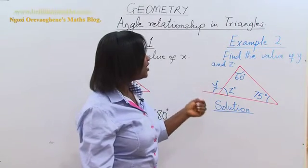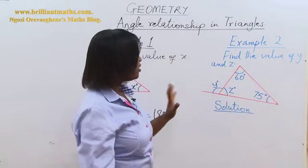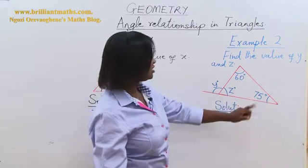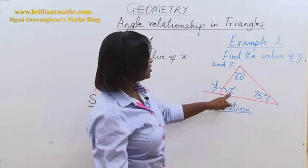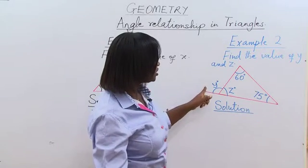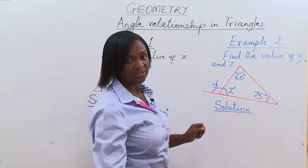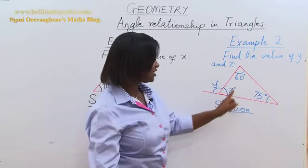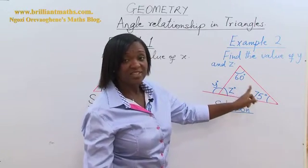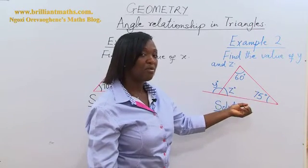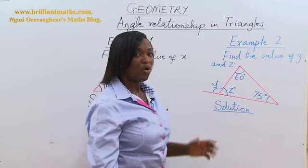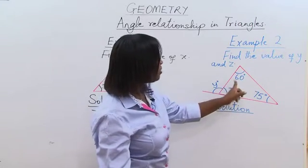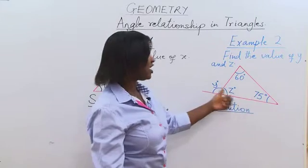Example 2. Find the value of Y and Z. We have a triangle with interior angles 60 degrees, 75 degrees, and Z. There is also an exterior angle measuring Y. There are two ways we can approach this: we can find Z first by adding 60 and 75 degrees and subtracting from 180 degrees, or we can find Y first by using the sum of the opposite interior angles, which equals the exterior angle.